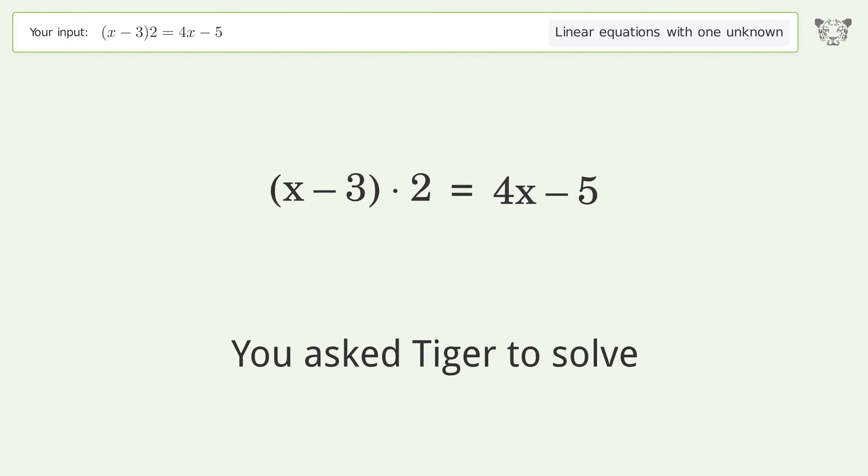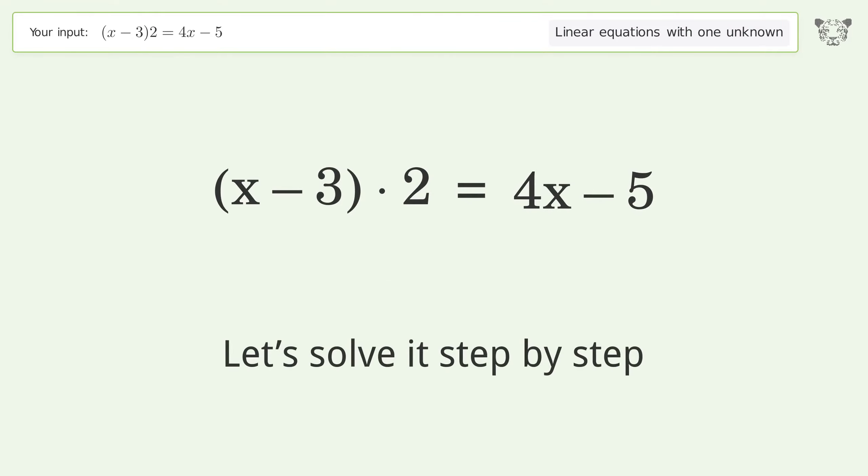You asked Tiger to solve. This deals with linear equations with one unknown. The final result is x equals negative 1 over 2. Let's solve it step by step.